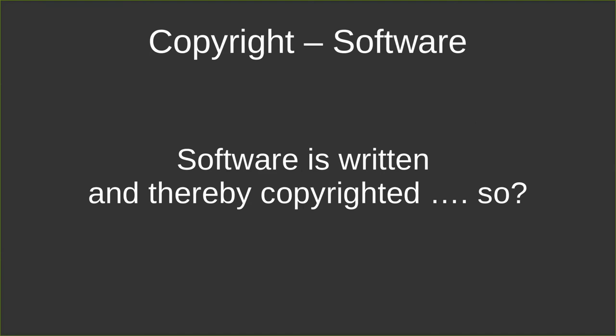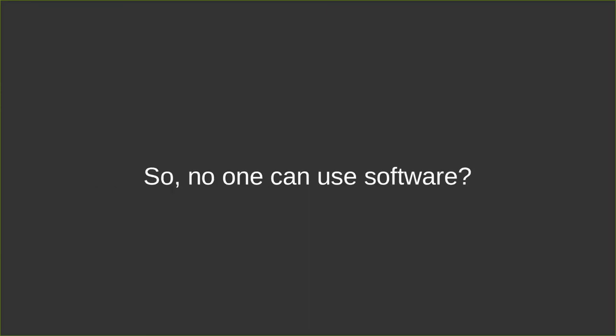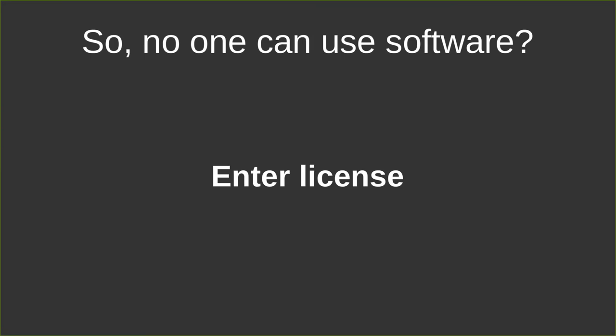So software is written and thereby it's copyrighted. That means no one can use my software - that's a bit of a problem, because if I release my software, you still can't use it; you still have exclusive rights. The copyright law applies to both the binary and the source code. So we have to solve this somehow, and the solution is for the next lecture - it's a license.